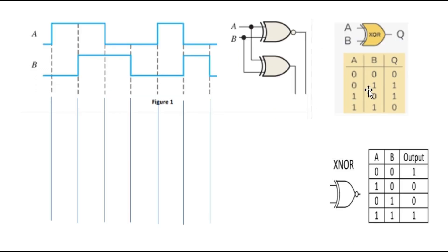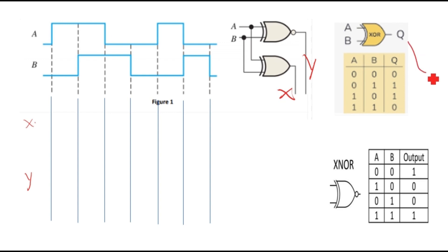I have already drawn the truth table of the XOR gate and XNOR gate. We will consider this output as X for the XOR gate and Y for the XNOR gate. So the XOR gate gives output X and the XNOR gate gives output Y. It's better to draw a pattern from the truth table.